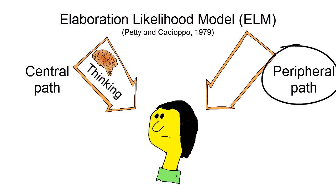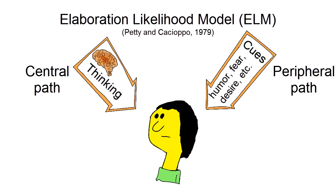The peripheral route, however, is a shortcut. It is activated by so-called peripheral cues, like humor, credibility of the source, fear, or desire.